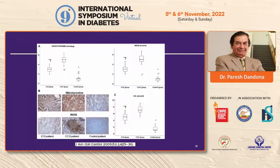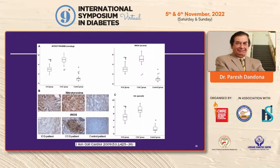Myocardial biopsies were taken from the infarct area of these patients. Comparing sections: control patients without significant infarct on the right; the middle panel shows infarct with lack of insulin leading to inflammation, increased iNOS, and nitrotyrosine; while insulin infusion significantly diminished these indices, clearly showing insulin was effective in protecting the myocardium.